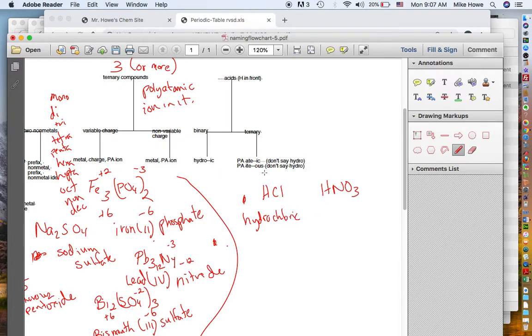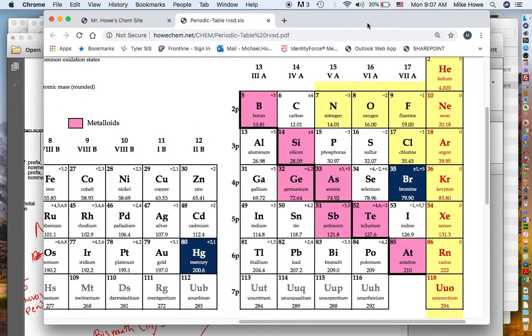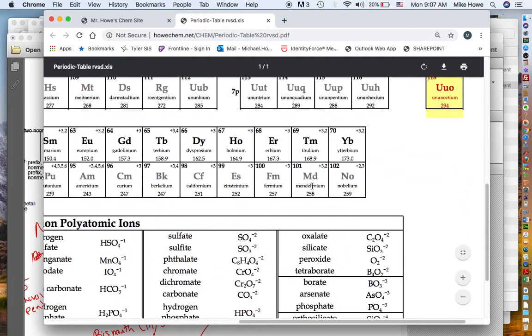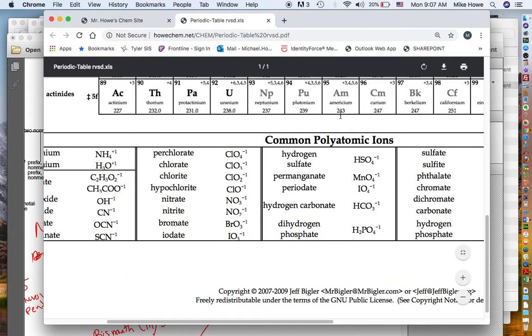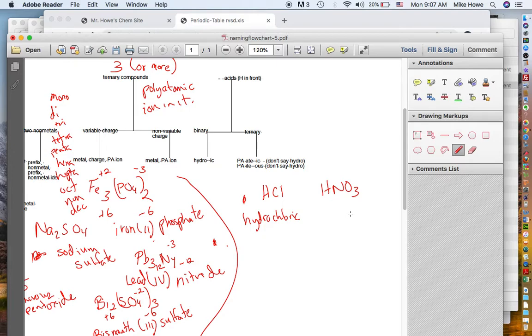If it's ternary, you say the name of the polyatomic ion. The ATE polyatomic ions end in IC. The ITE polyatomic ions end in OUS, and you don't say hydro for this. So you look at this polyatomic ion, and that particular polyatomic ion is called nitrate. So since that's nitrate, instead of saying ATE, you put down IC, nitric acid. So that's called nitric acid.